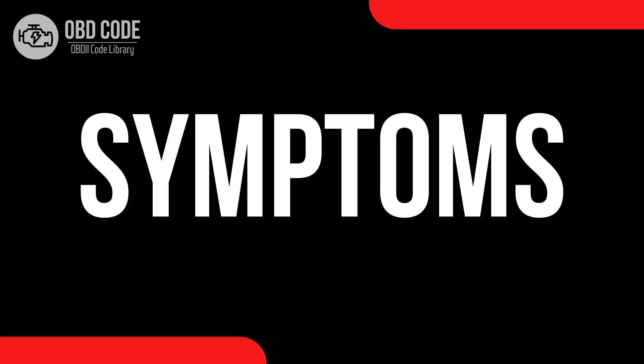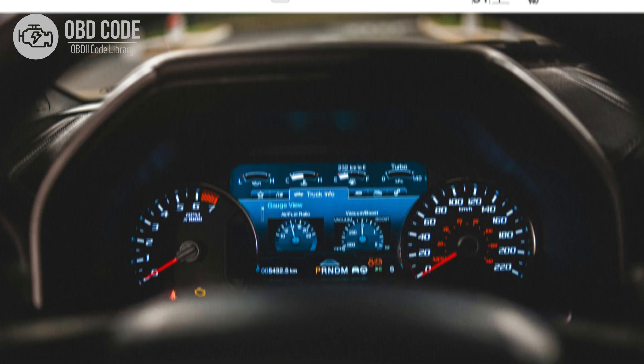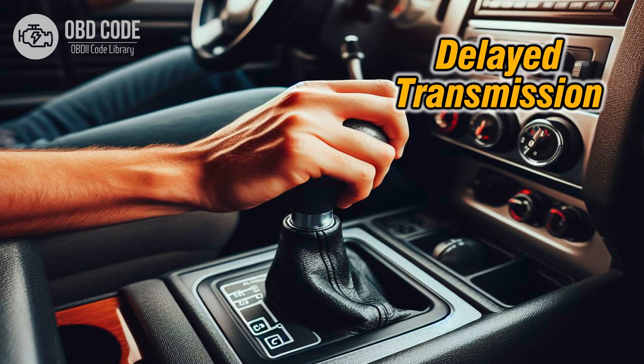Code symptoms P0750: 1. Check engine light illuminated on the dashboard. 2. Transmission may not shift into the correct gear or may shift erratically. 3. Harsh or delayed transmission engagement, especially during gear changes.